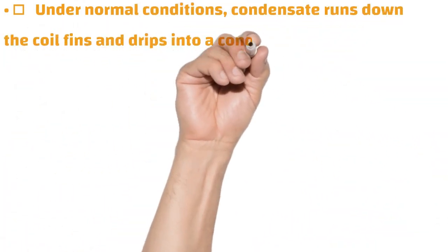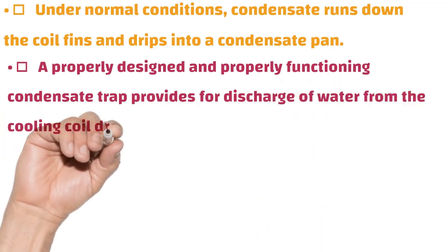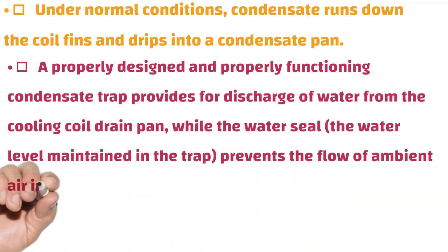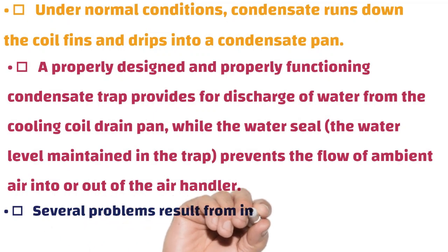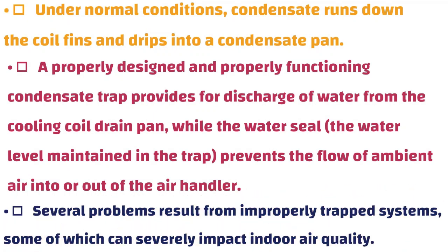Under normal conditions, condensate runs down the coil fins and drips into a condensate pan. A properly designed and functioning condensate trap provides for discharge of water from the cooling coil drain pan, while the water seal prevents the flow of ambient air into or out of the air handler. Several problems result from improperly trapped systems, some of which can severely impact indoor air quality.